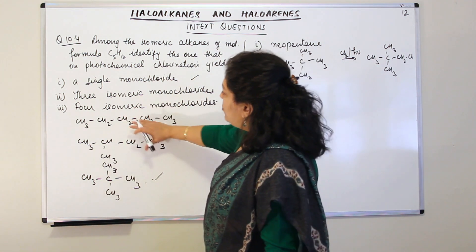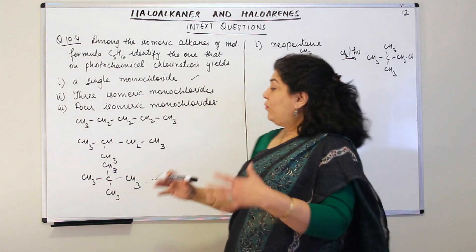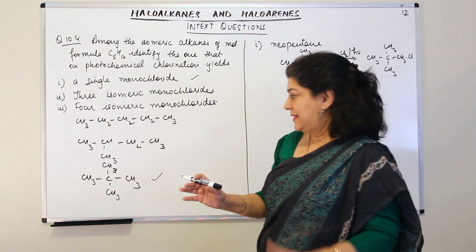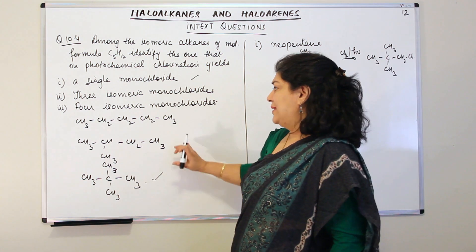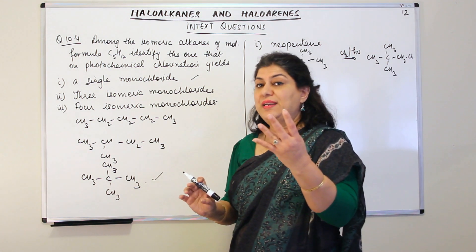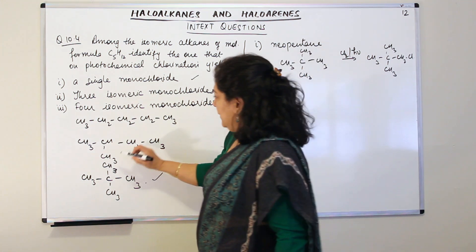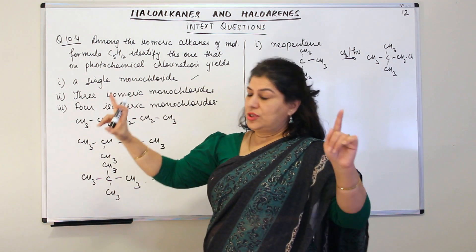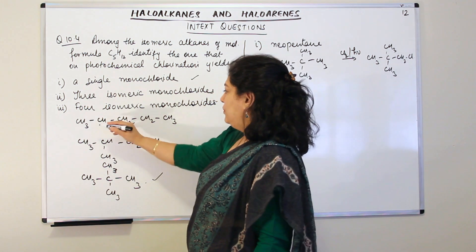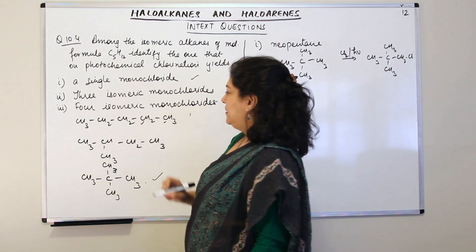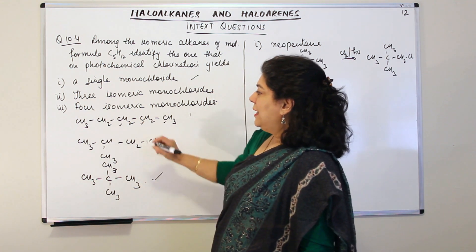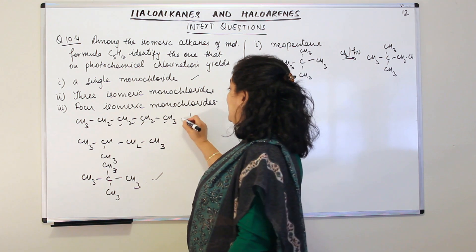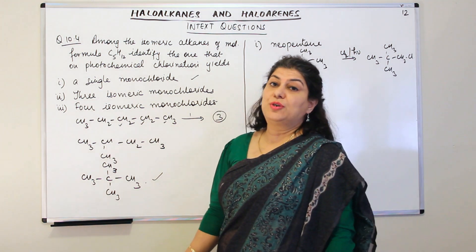The question also asks which isomer gives three isomeric monochlorides and which gives four. For n-pentane, consider the types of hydrogens: substitution can occur at C1, C2, or C3. Substitution at C4 is the same as C2 from the other end, and C5 is the same as C1. So n-pentane has three distinct hydrogen positions and will give three isomeric monochlorides.